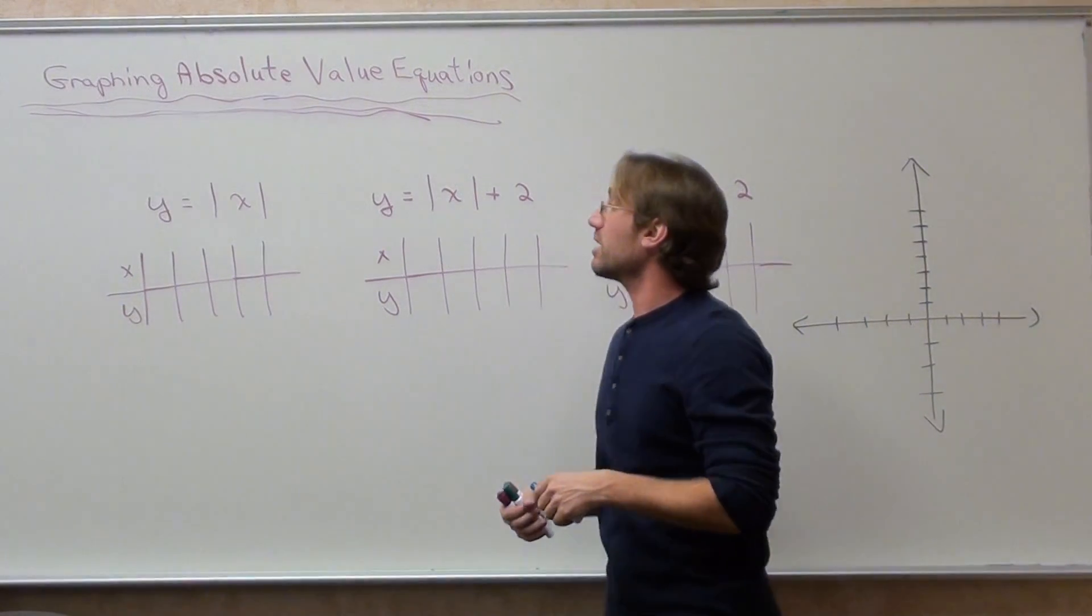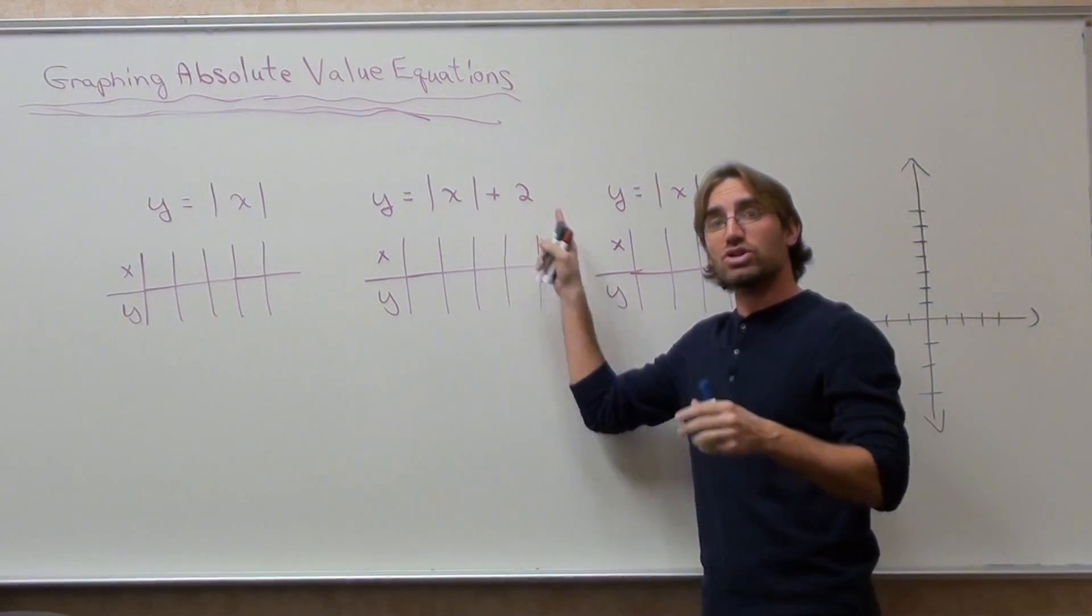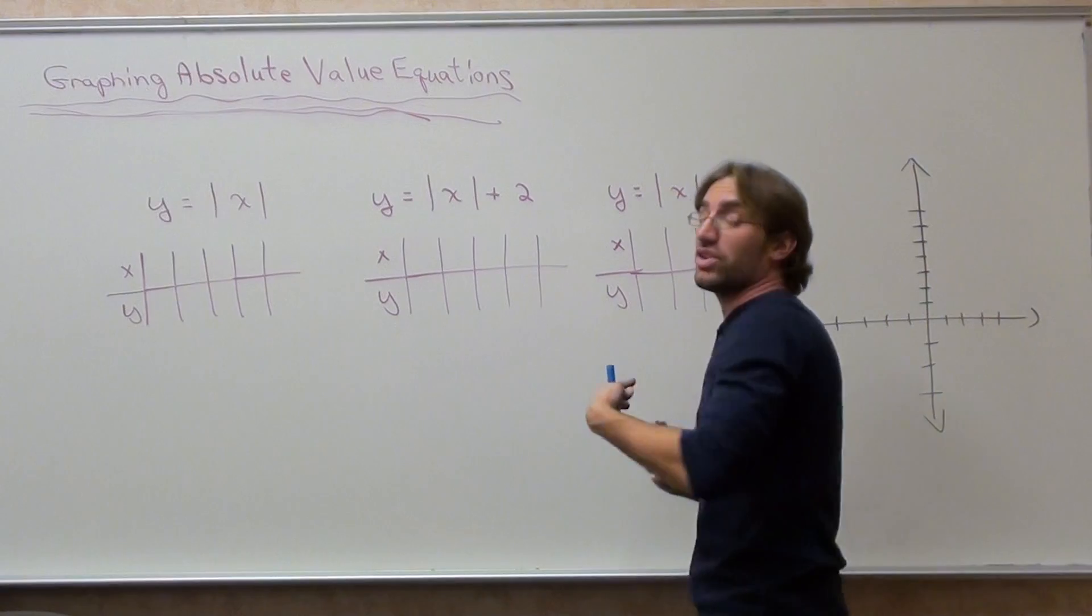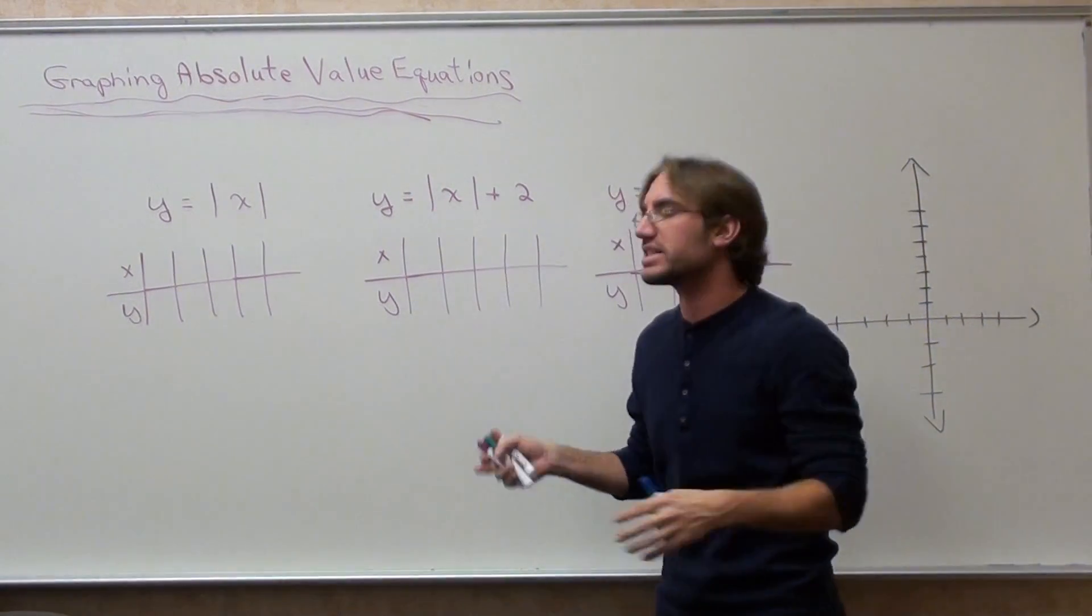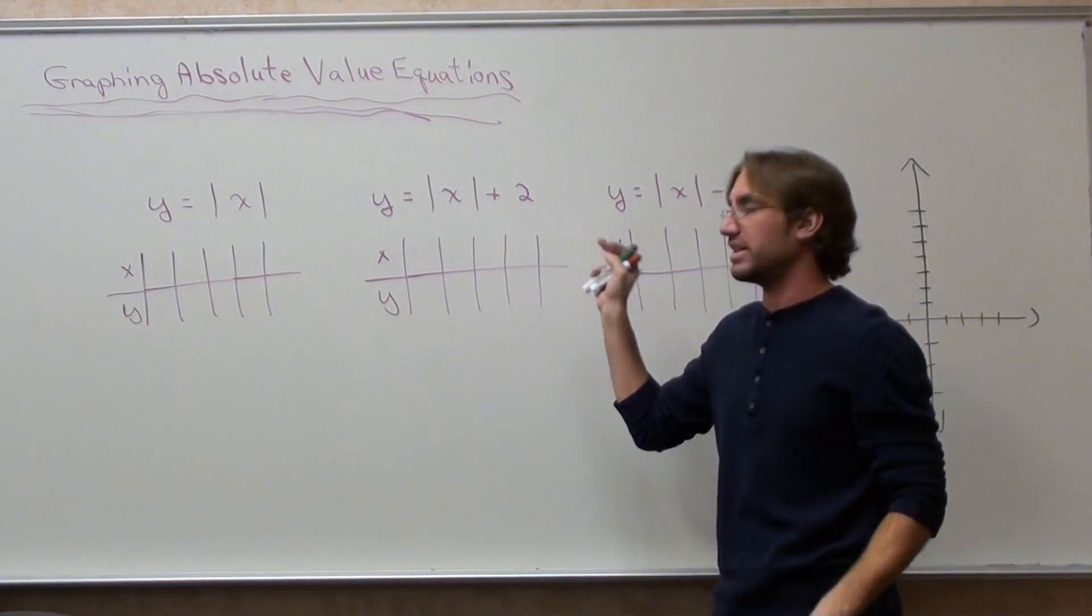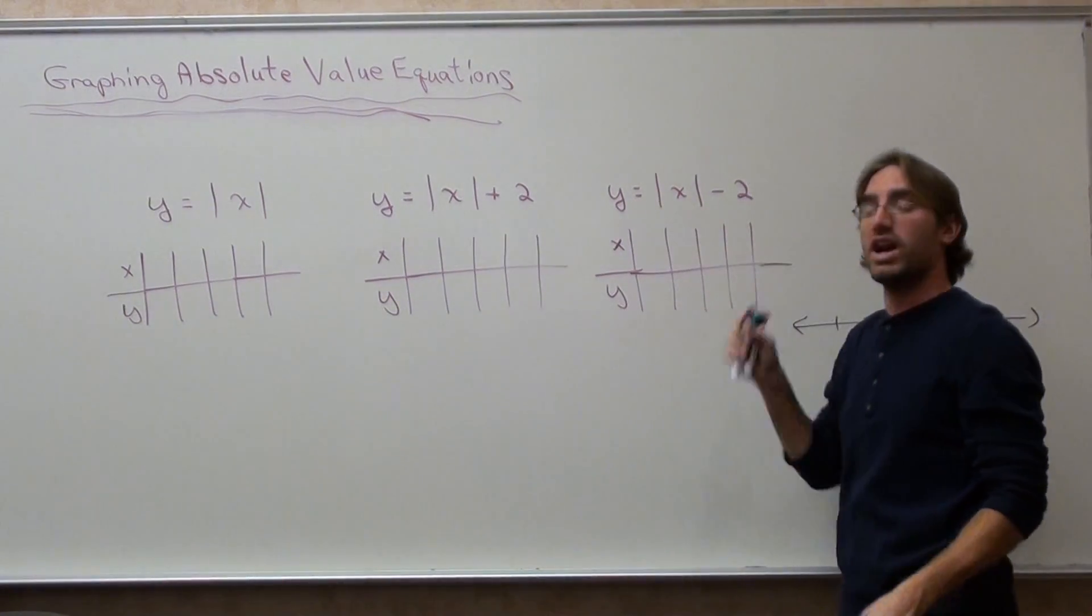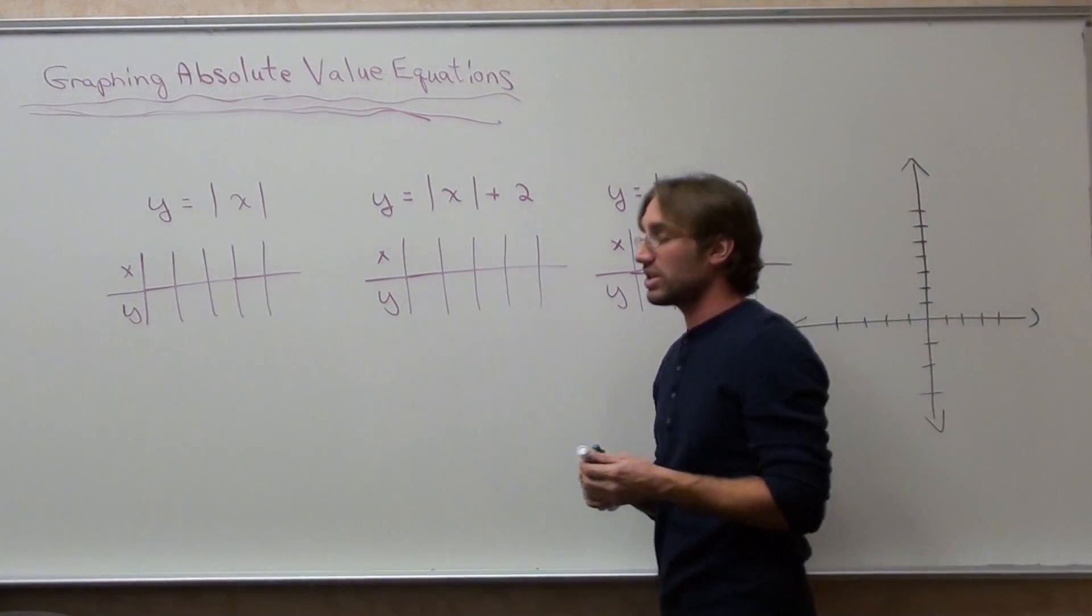Okay, graphing absolute values again, but this time we're adding or subtracting a number after the absolute value. It's not going to be inside, and it's not going to be a number in front of the x. It's all outside this time. So it's plus 2 outside and subtract 2 outside. And this does have a stark difference too.